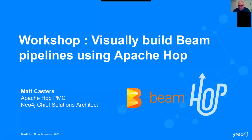For the past couple of Beam Summits, I've been peddling this idea that we can visually design Apache Beam pipelines. First, this was done with a Kettle plugin called Kettle Beam, presented in Berlin. Then in the last couple of years, we've been developing an alternative platform called Hop. Today I'm going to talk about Apache Hop and how we support building those Beam pipelines in a more streamlined fashion. A lot of water has passed under the bridge and we've made tremendous progress.